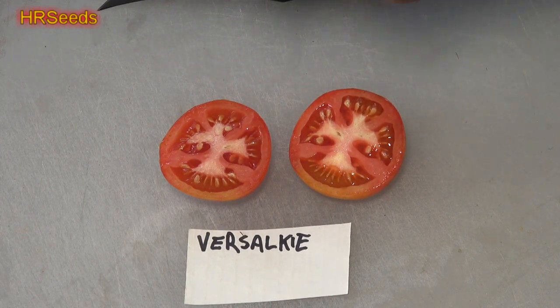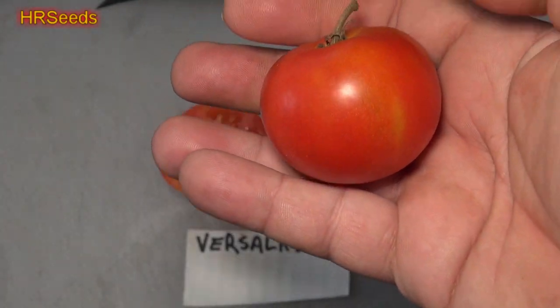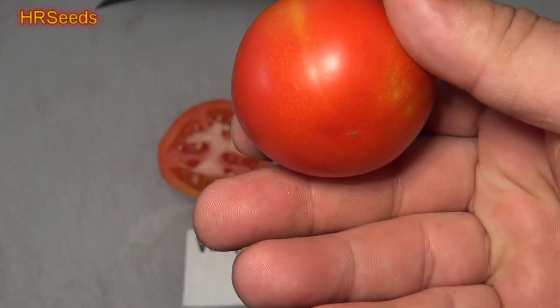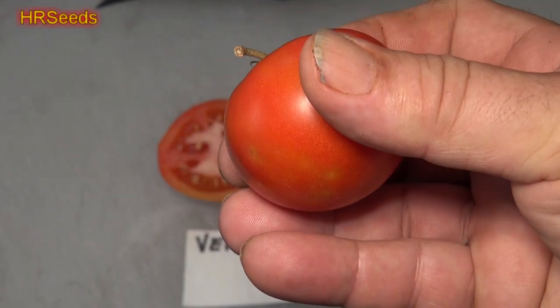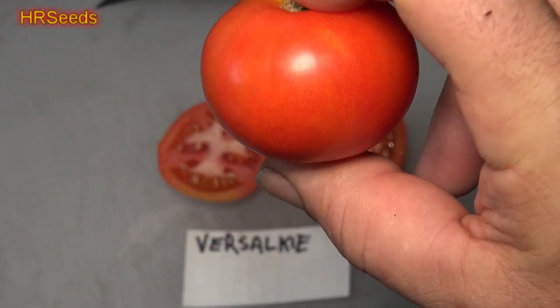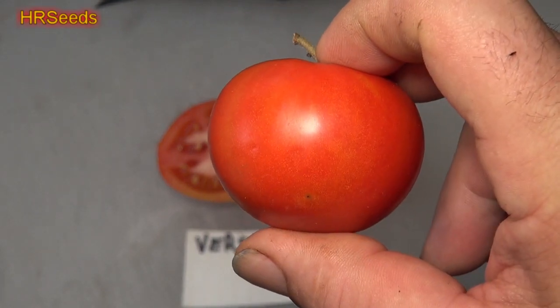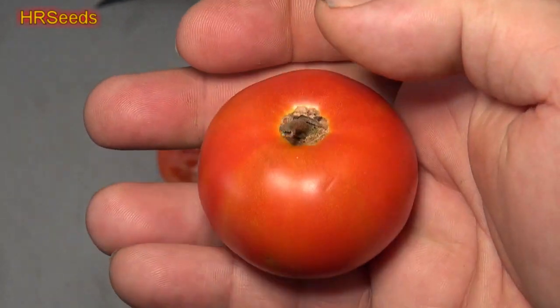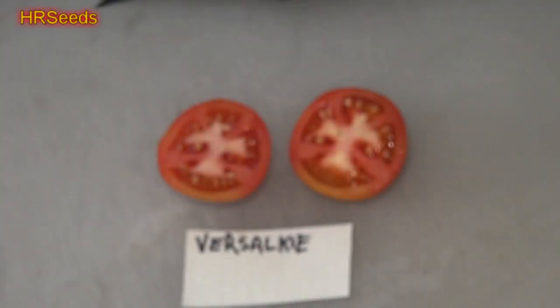I'll give you an idea on what the size of the tomato looks like first. You can see it's a small slicer, a little bigger than a Campari size tomato. It's slightly flattened as you can see, with a nice deep orange color.